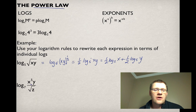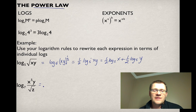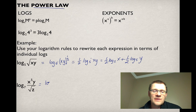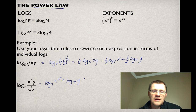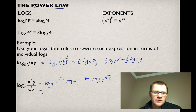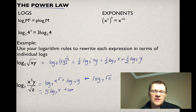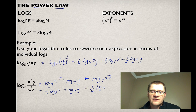For log₇(x⁵ · y / √z): we have two things multiplied and one divided. The product law says to add the multiplied parts, and the quotient law says to subtract the divided part. Rewriting: log₇(x⁵) + log₇(y) − log₇(√z). Then we move any exponents in front using the power law: 5 log₇(x) + log₇(y) − ½ log₇(z), since the square root is an exponent of one-half.